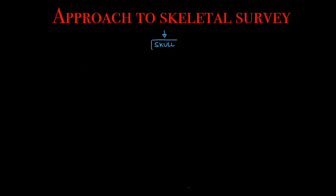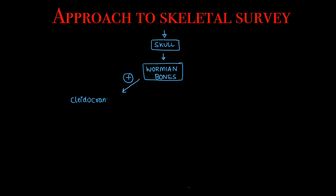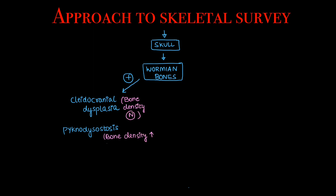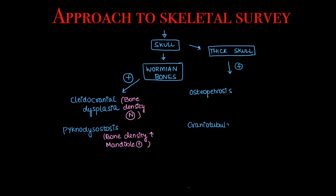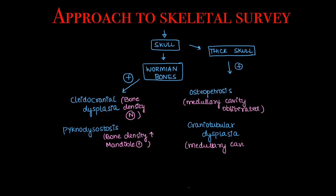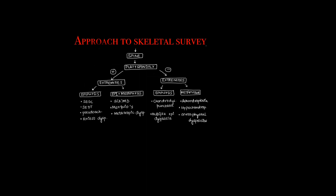Moving on to the next flowchart — look at the skull. If Wormian bones are present, it can be cleidocranial dysplasia or pycnodysostosis. Cleidocranial dysplasia has normal bone density, while pycnodysostosis has increased bone density and mandible involvement. If there is a thick skull, it can be osteopetrosis or craniotubular dysplasia. In osteopetrosis, the medullary cavity is obliterated in other bones, whereas in craniotubular dysplasia it is preserved.